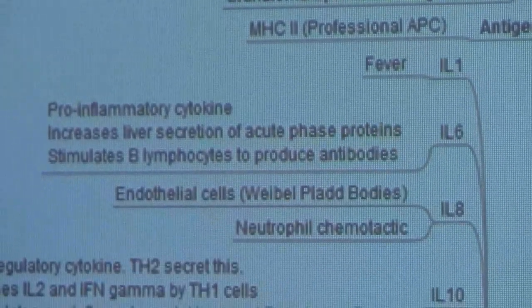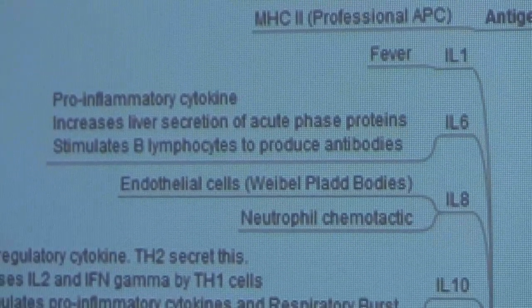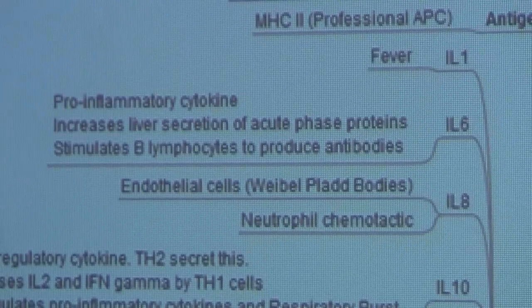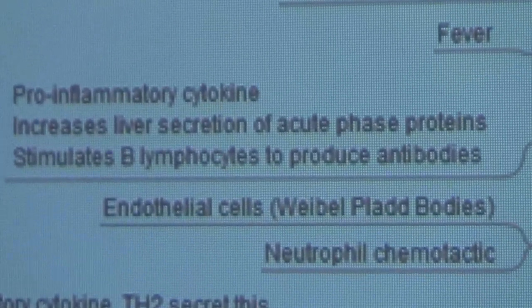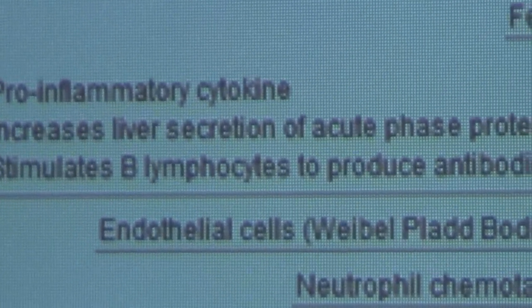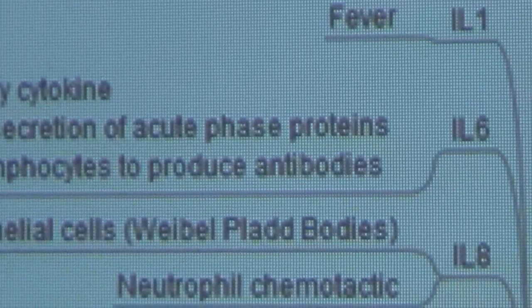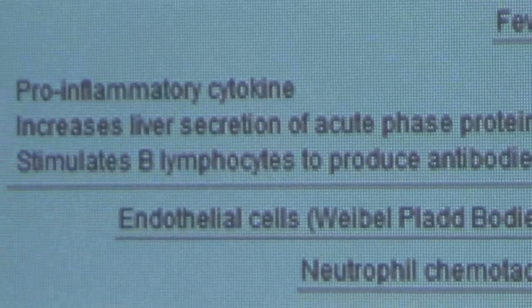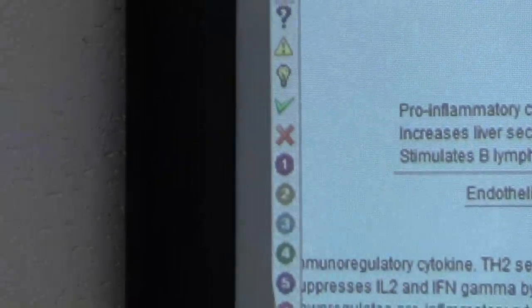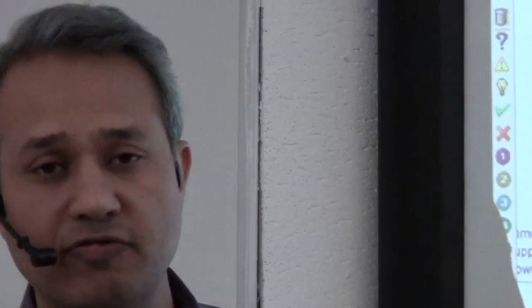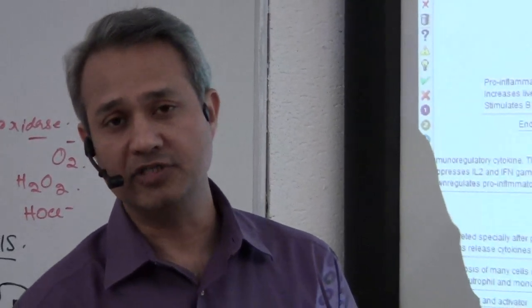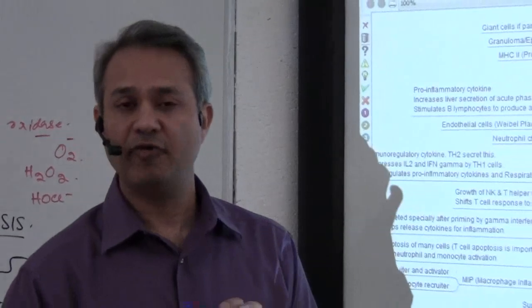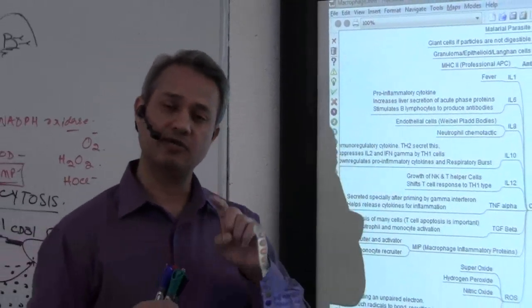The other important interleukin is interleukin-6. What is the interleukin-6's function? The very important function is, it is a neutrophil chemotactic factor. So this is funny. Macrophage calls neutrophils to fight. Neutrophils call macrophages to fight. Why is this so? So let's talk about it for a second.